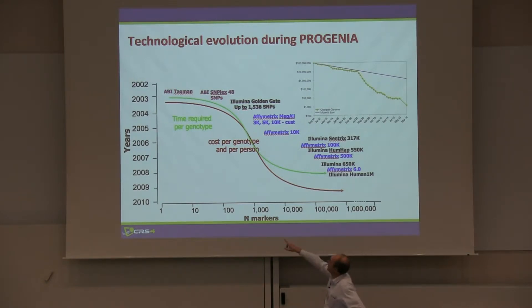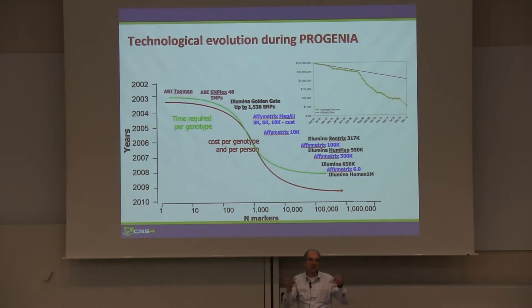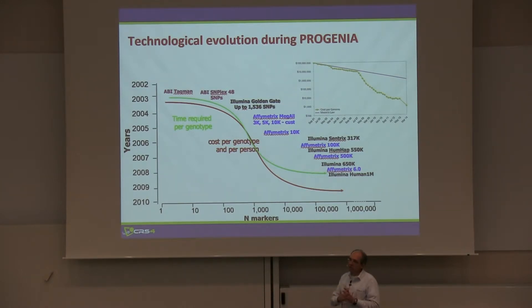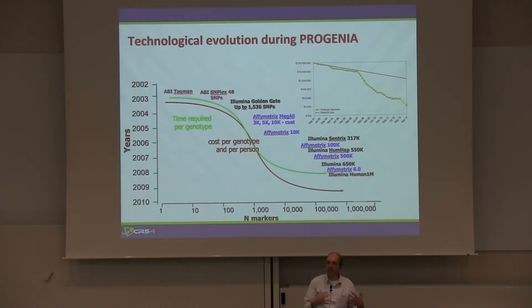The Progenia project started in 2002. In 2002, they didn't have a clue that it would be possible to actually do sequencing at scale — thousands of people within the timeframe of the project. So the result is that you're doing a longitudinal study, acquiring information on a population, and you need to put all these things together. If you want to do this, you have to have a system that handles data and is able to accommodate for data evolution, and you cannot predict from the beginning what this evolution will be.